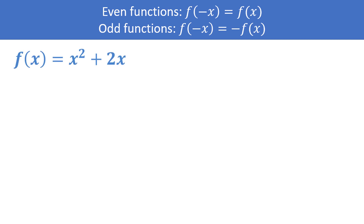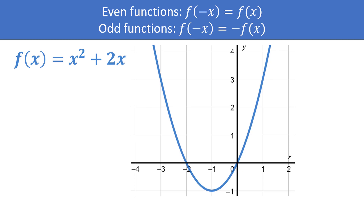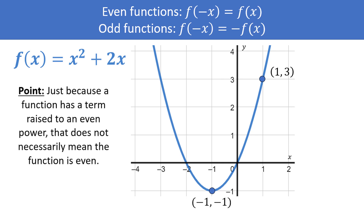Consider f of x is equal to x squared plus 2x. Even though this has x raised to an even power, that doesn't automatically mean this function is even. In this case the function is not even, as opposite inputs do not produce the same output. The point is, just because a function has a term raised to an even power, that does not necessarily mean the function is even.